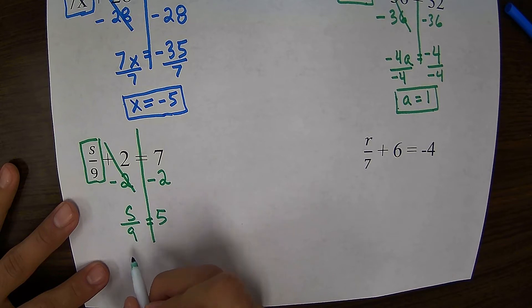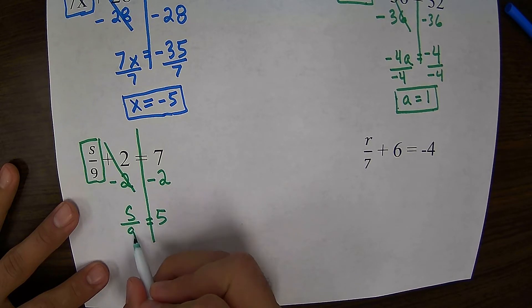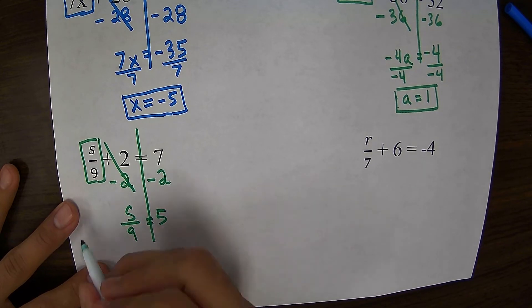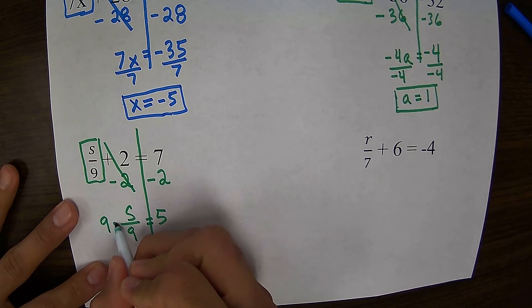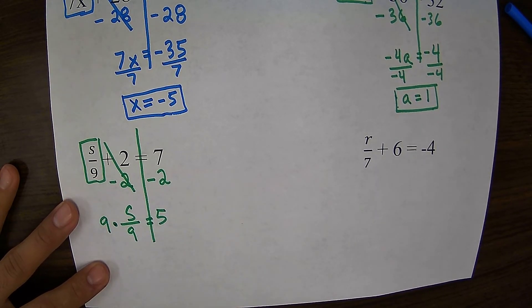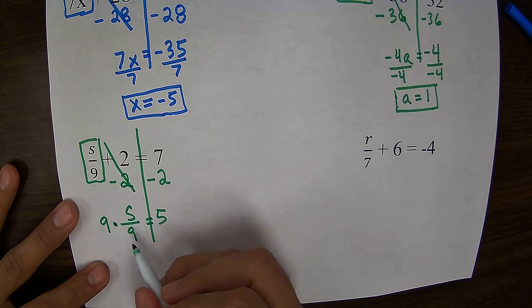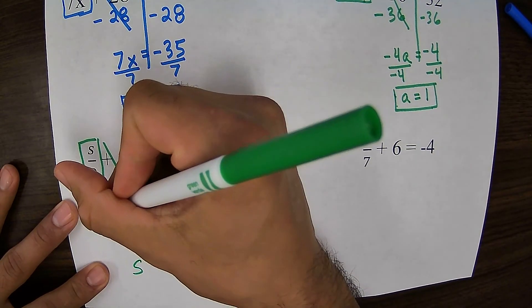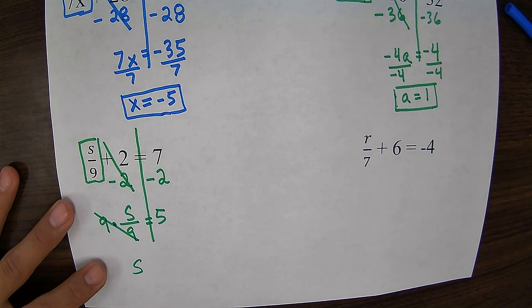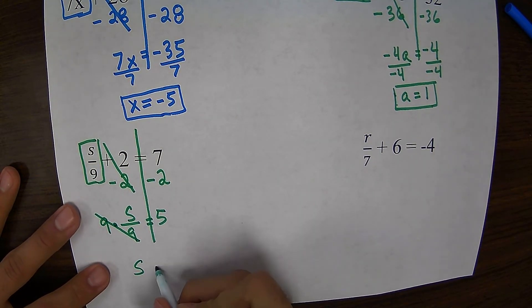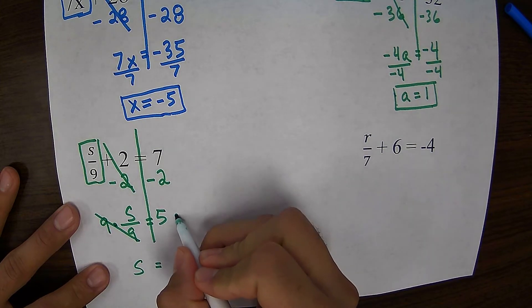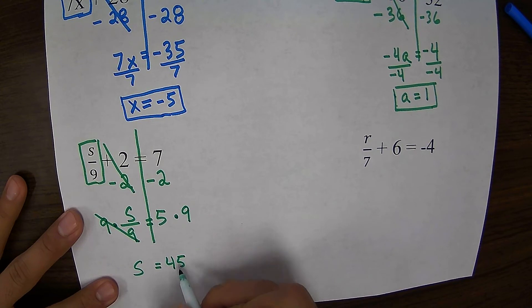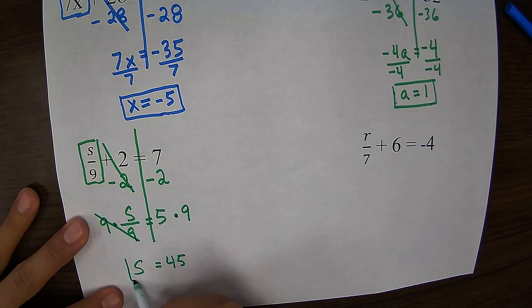We're always performing the opposite operation. If s is being divided by 9, if I want to get s by itself, I'm going to do the opposite, which I'm going to multiply by 9. Because 9 times s over 9 is actually going to give me s because the 9s will cancel. Whenever I do one side, I have to do the other. So I have 5 times 9, gives me 45. So s equals 45.